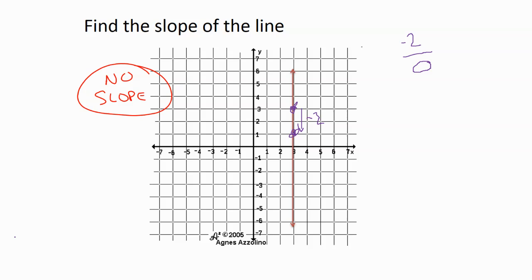So remember, a horizontal line has a slope of zero, a vertical line has no slope.